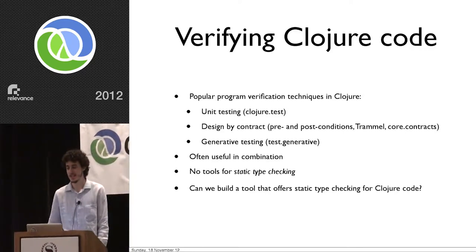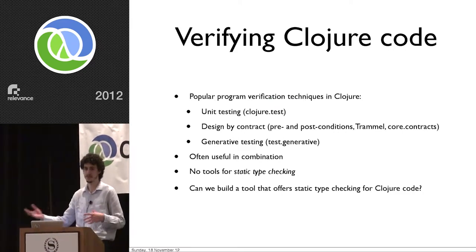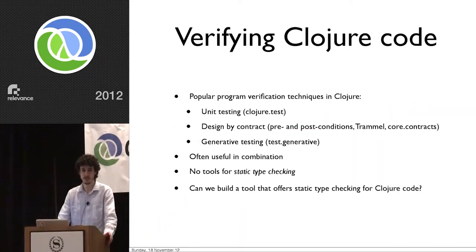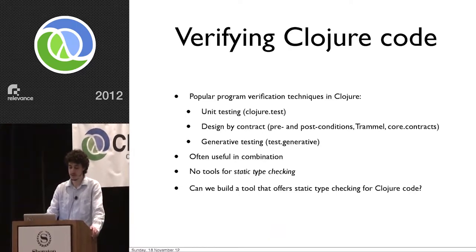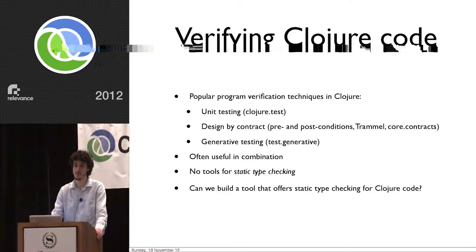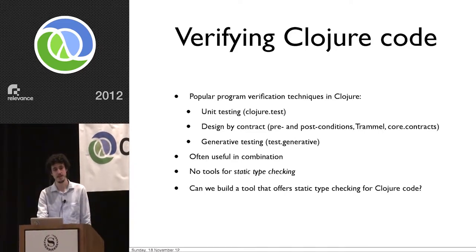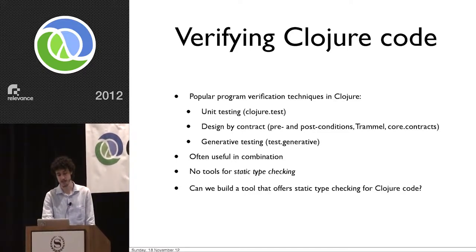As Closure programmers, we like to verify our code as being correct. Generally, we need a combination of different techniques to get higher confidence. We've got things like unit testing, design by contract, and generative testing, and often we use these in combination. One particular tool that's not well represented in the Closure ecosystem is static type checking. That might seem obvious because Closure is designed to be a dynamically typed language, but there have been recent advancements in this field of research that make this a good question: can we build a tool that offers static type checking for Closure?